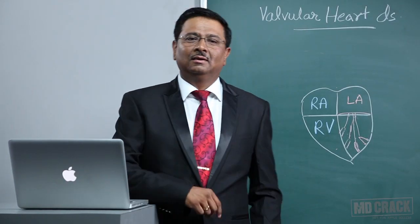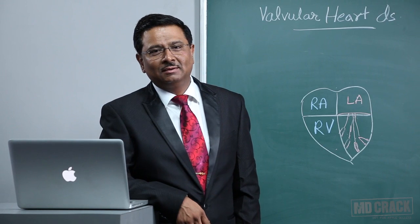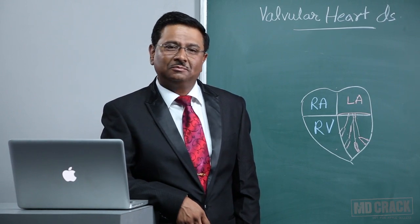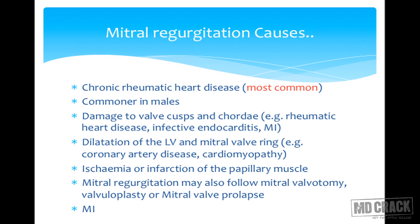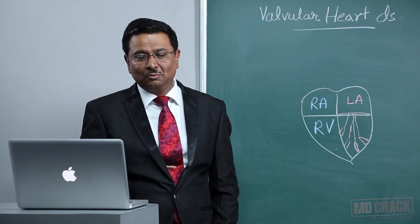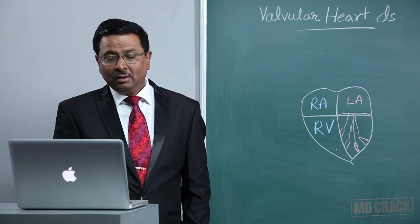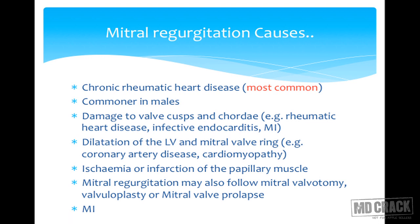Welcome back students. We shall be talking about mitral regurgitation. The various causes include chronic rheumatic heart disease, the most common cause, which is commoner in males — unlike mitral stenosis which is more common in females. Other causes include damage to valve cusps, for example in rheumatic heart disease, infective endocarditis, and myocardial infarction.